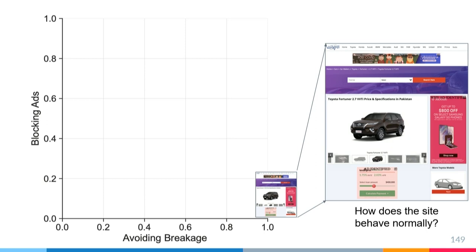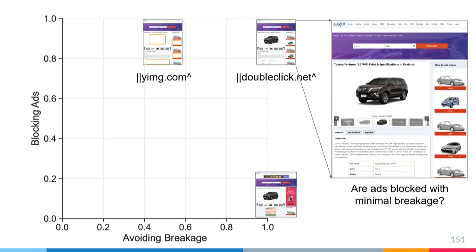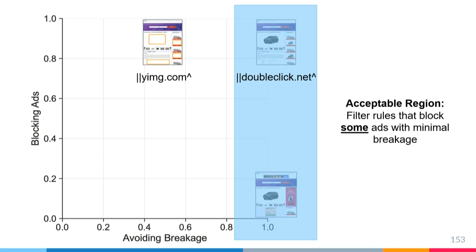When we do apply a filter rule, it can block all ads but may cause some breakage. It may also block all ads with minimal breakage, so this top right corner is an ideal region. In practice, filter rules can block some ads with minimal breakage, and so the right side of this plot is an acceptable region.